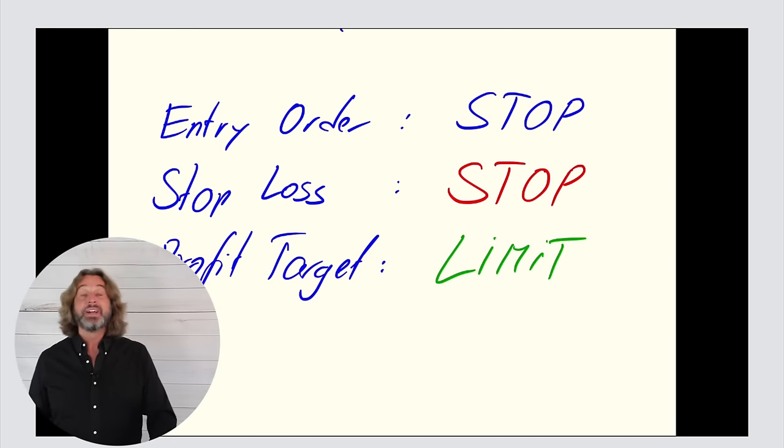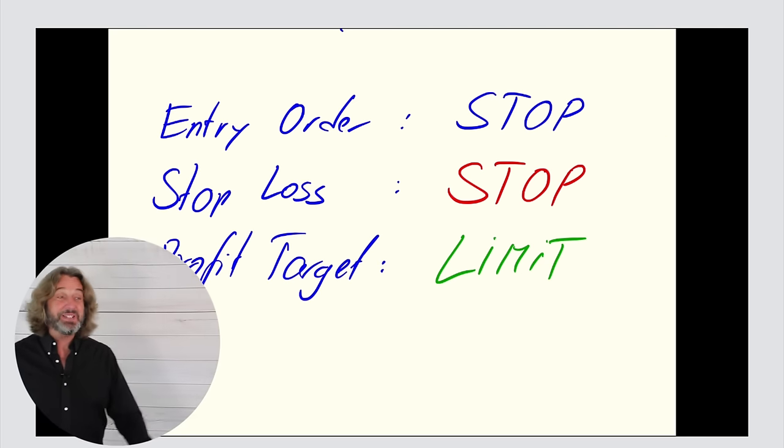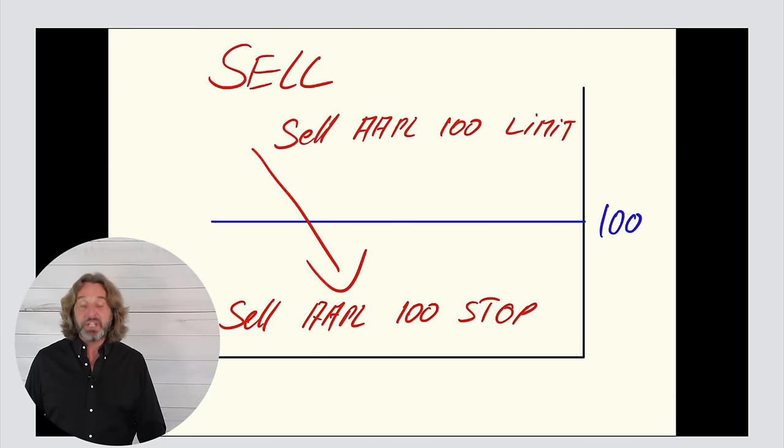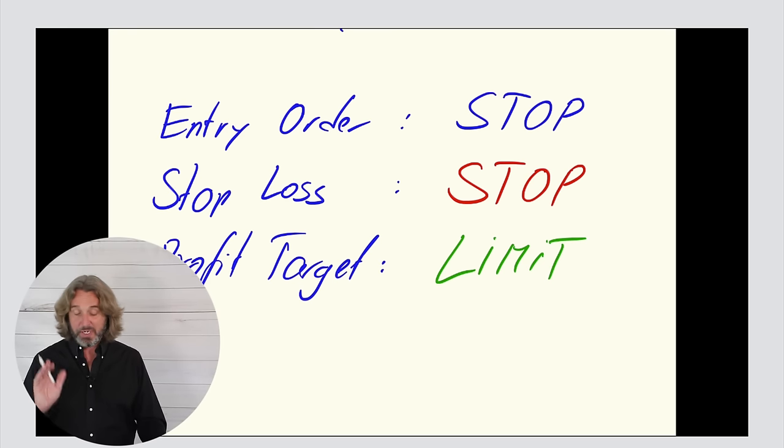Because I want to make sure that I'm taking profits as soon as we are crossing above a certain level. So this is the shortcut basically. For your entry order I recommend using a stop order, for your stop loss use a stop order, and for your profit target use a limit order. Is this helpful? And again, this is not supposed to be a comprehensive explanation because as you can see it can get tricky. I want you to remember the shortcut.